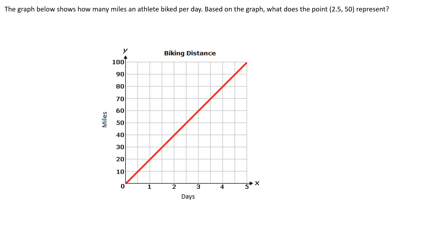The graph below shows how many miles a day an athlete biked. Based on the graph, what does the point two and a half, 50 represent?